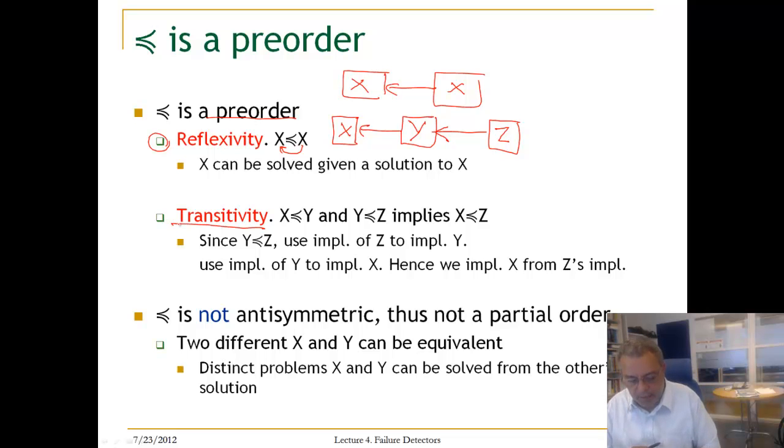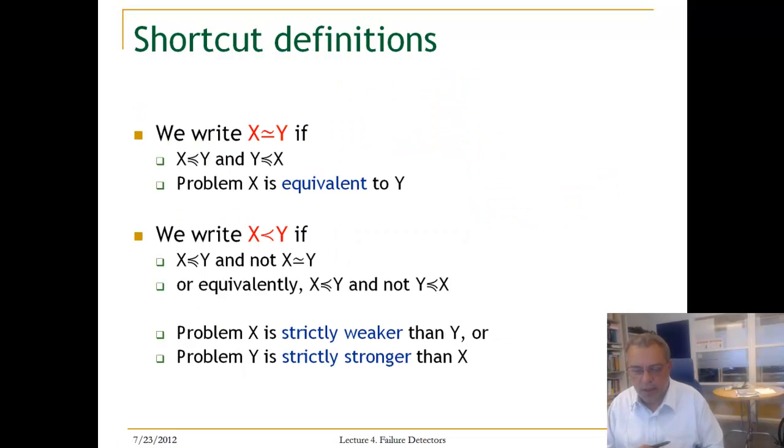It is not anti-symmetric, because it is possible to have one abstraction X that can be used to implement the problem, a solution for the problem Y. And we can also have a solution of a problem Y to implement X. So these are two different algorithms for two different problems.